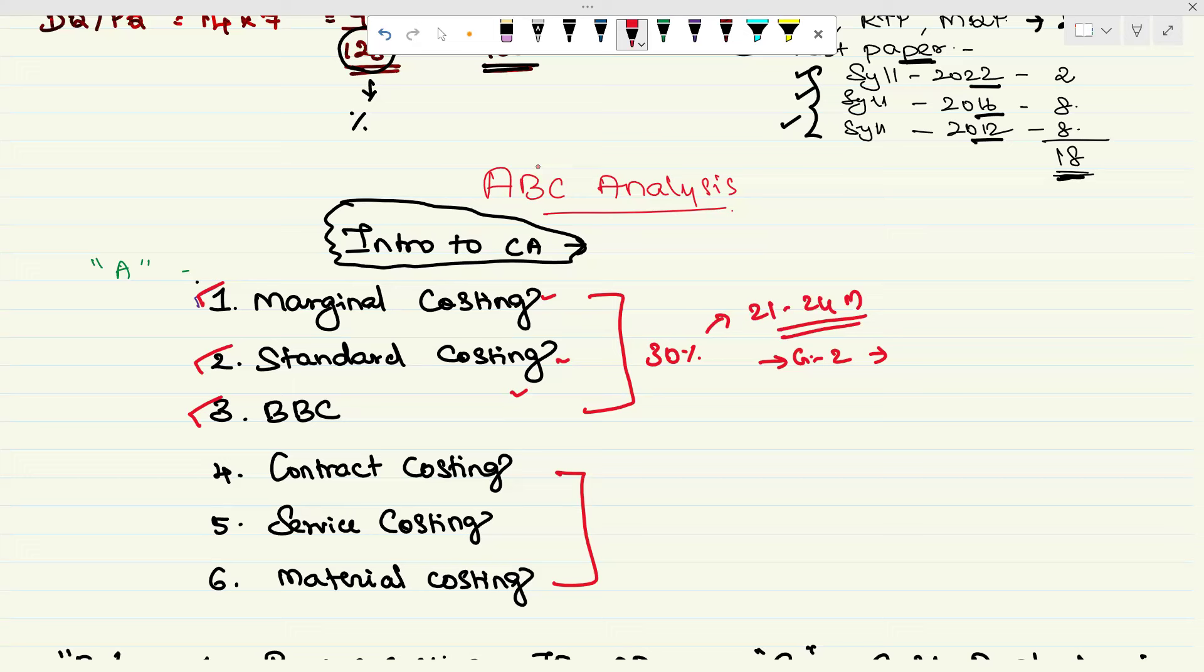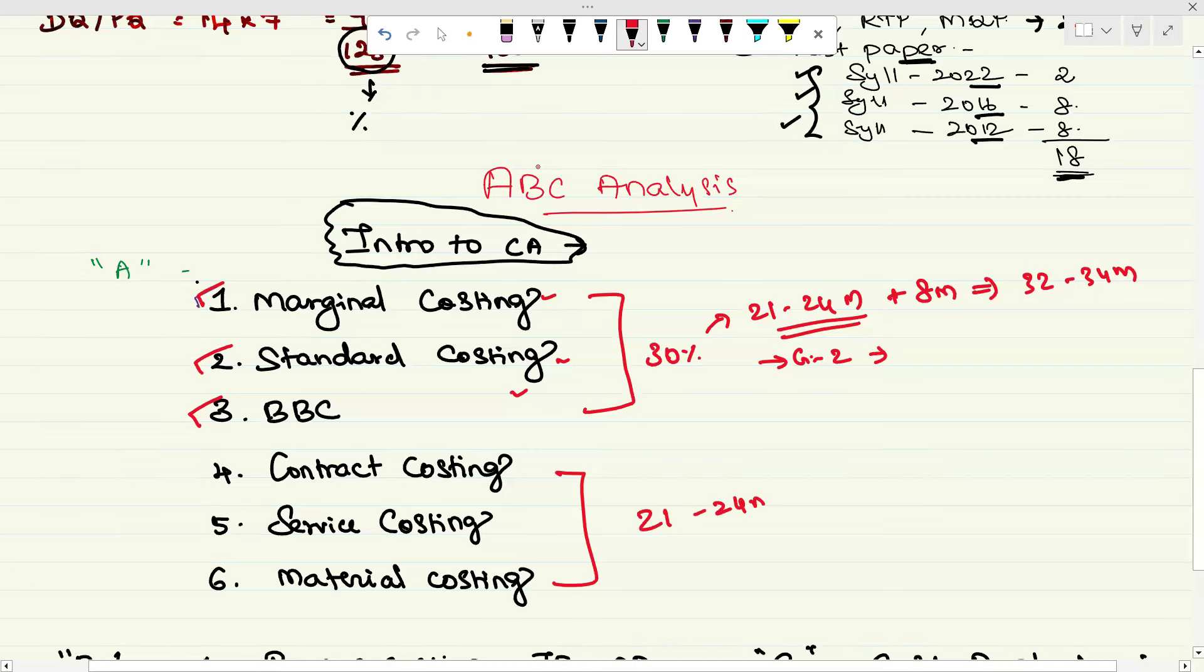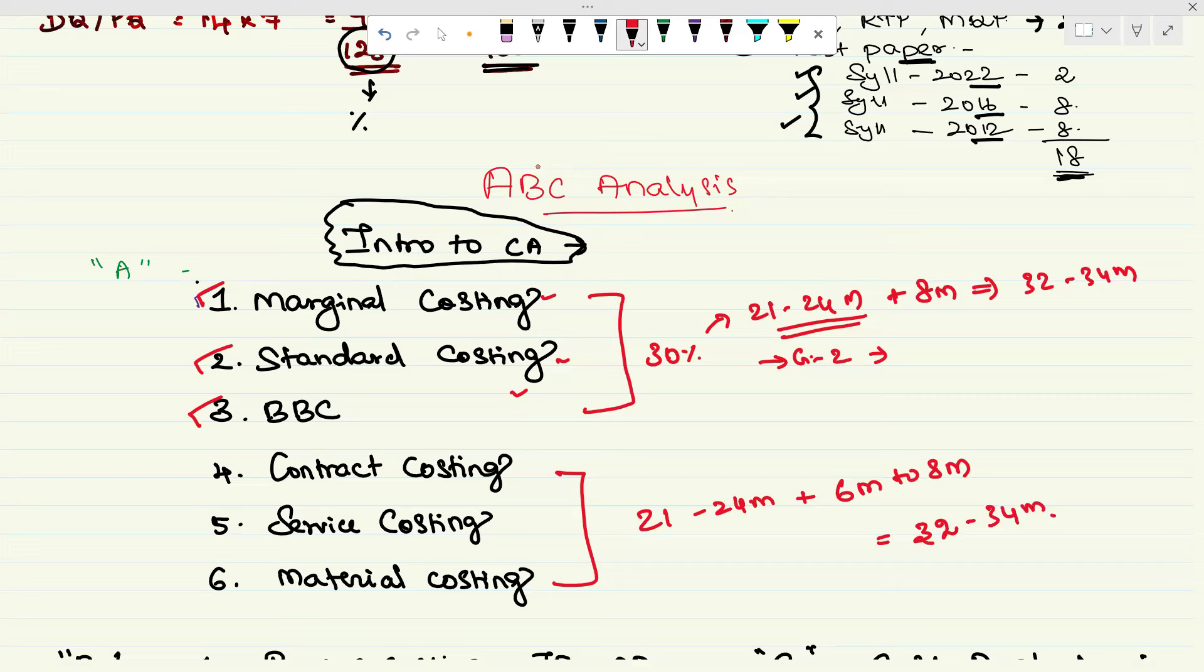So in total, 32 to 34 marks will be there from these three months. If you do this, almost 60 to 68 marks of your scoring will be done if you focus on these chapters. You may expect a single 14 mark question from marginal cost or material costing.